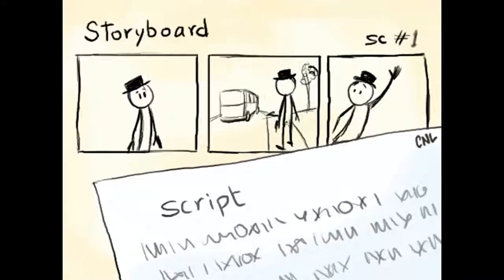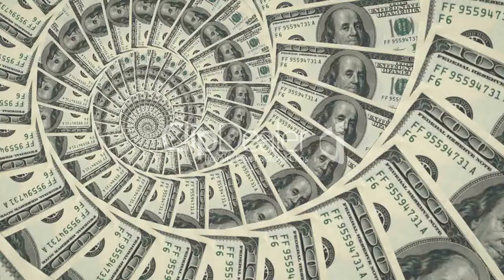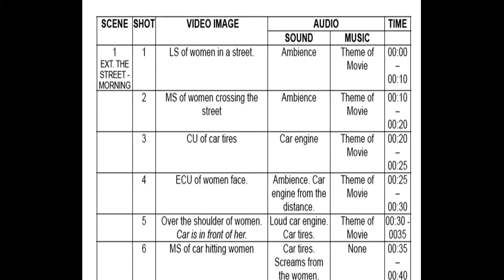Develop the script and storyboard for the staff to have an idea of the film. Gather economic resources and hire people like artists, staff, makeup artists, cameramen, etc. Also prepare the technical script including camera positions and shots, types of planes, and places where scenes will be filmed, etc.